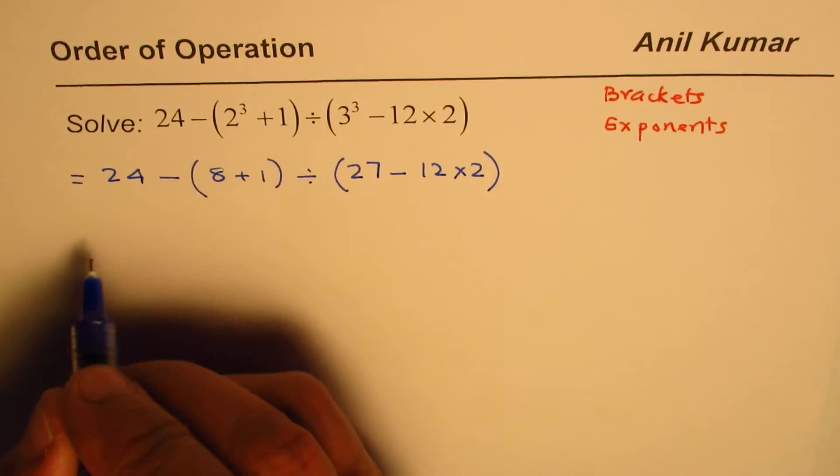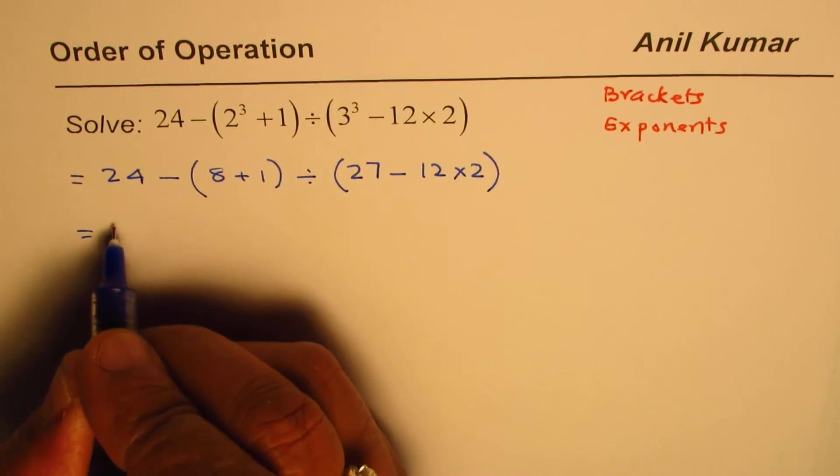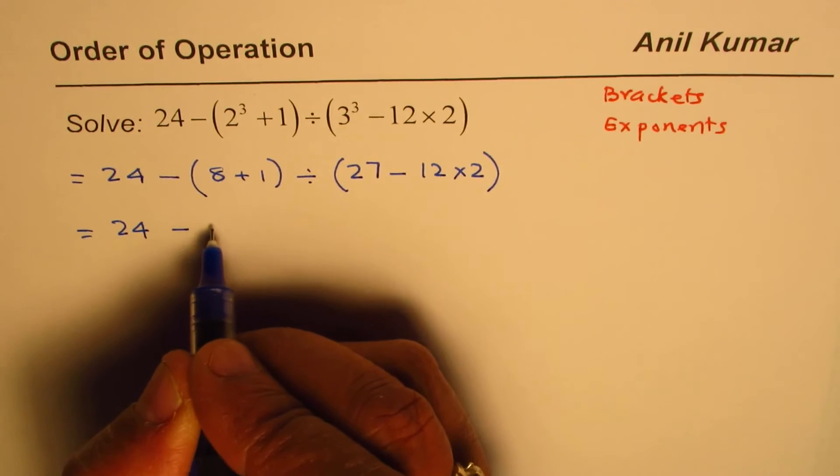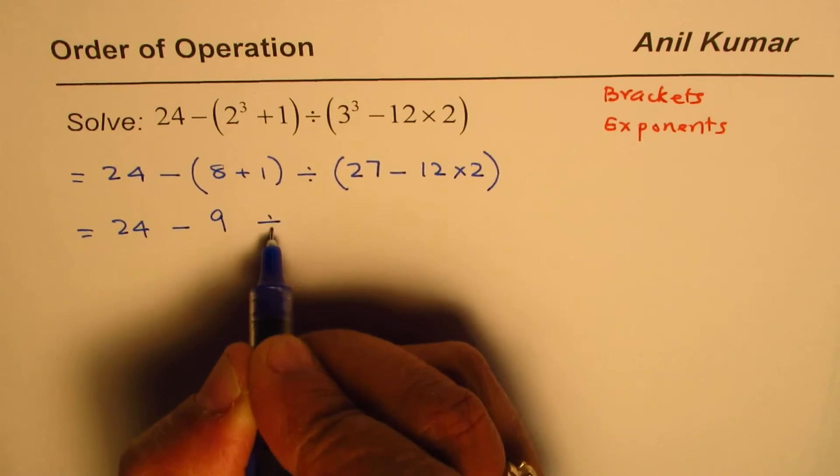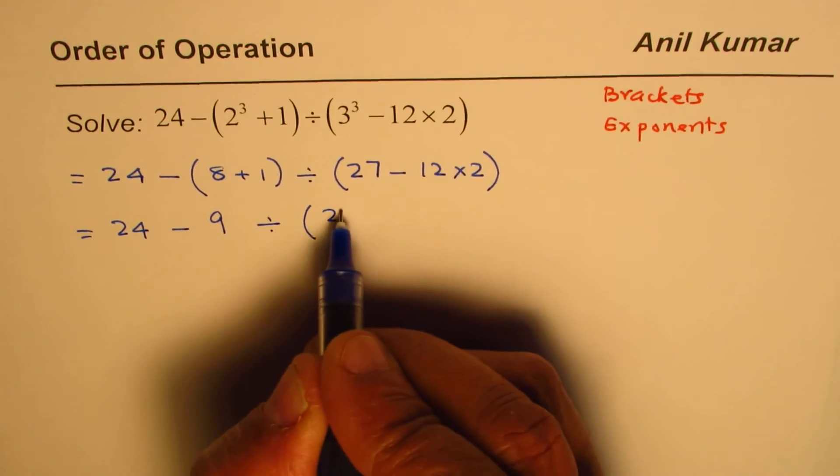Now we'll do the bracket. Inside the brackets we have 24 minus 8 plus 1 is 9, divided by, in this case we have to do a couple more steps. We have 27 minus 12 times 2 is 24.